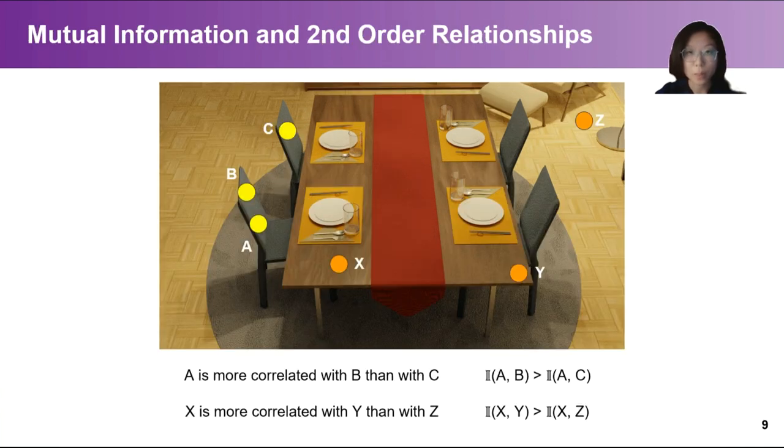Thus, we use mutual information to measure covariations and correlations. More explicitly, the mutual information between scene points from the same semantic entity should be larger than points from different semantic entities.